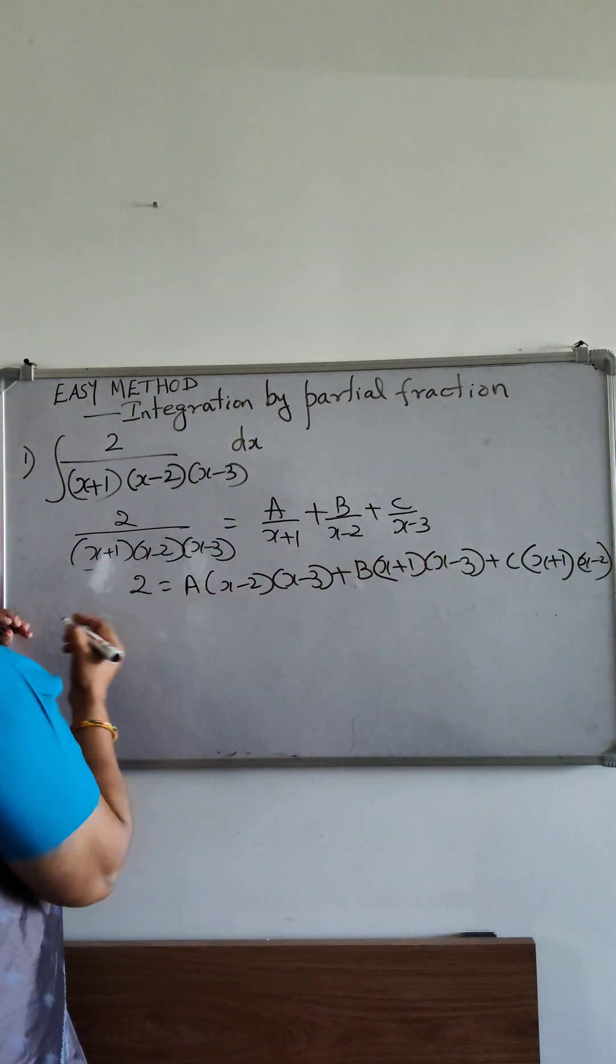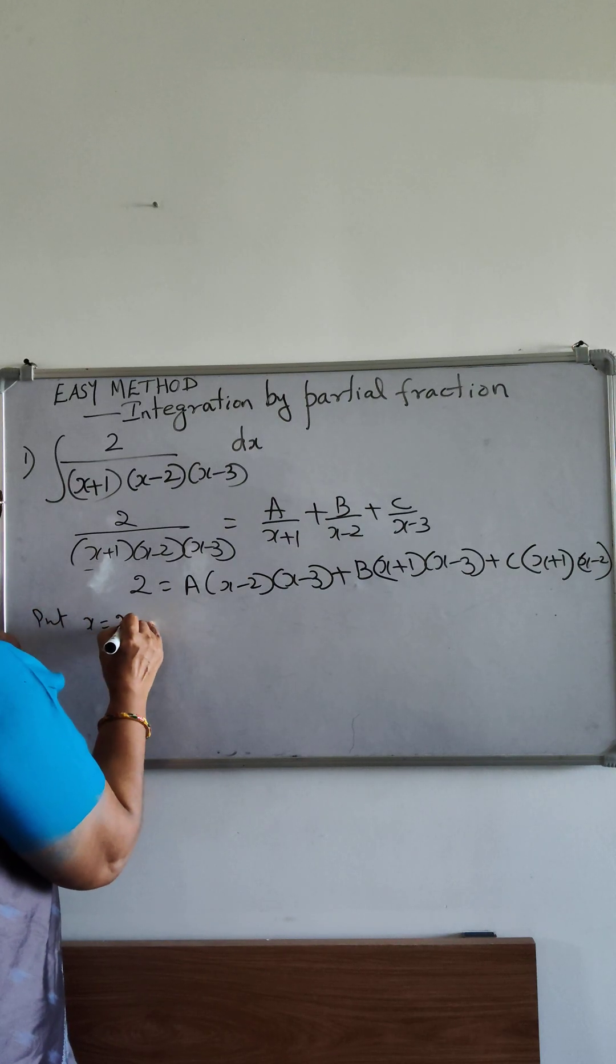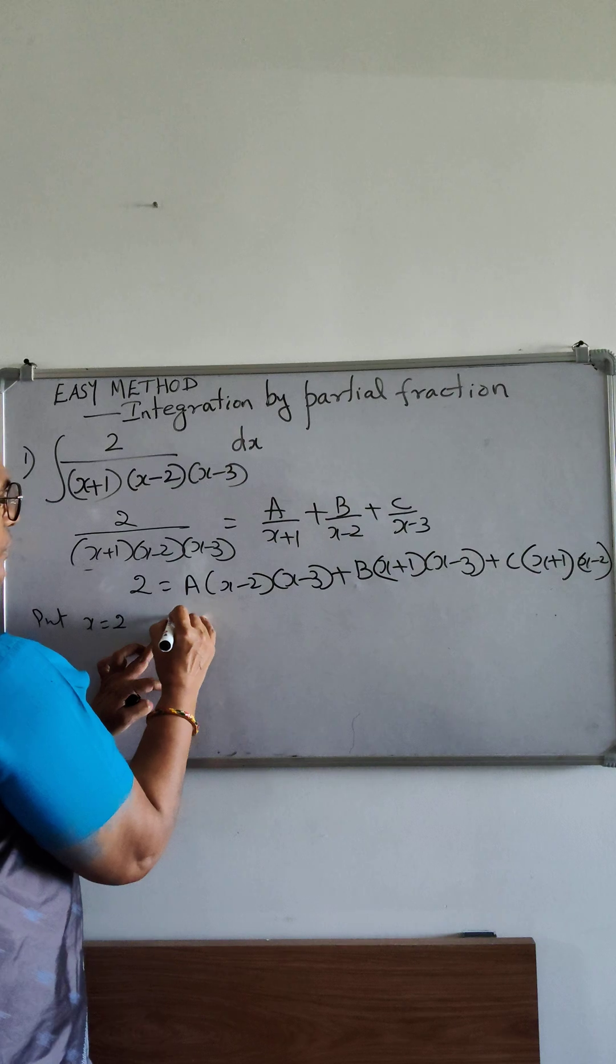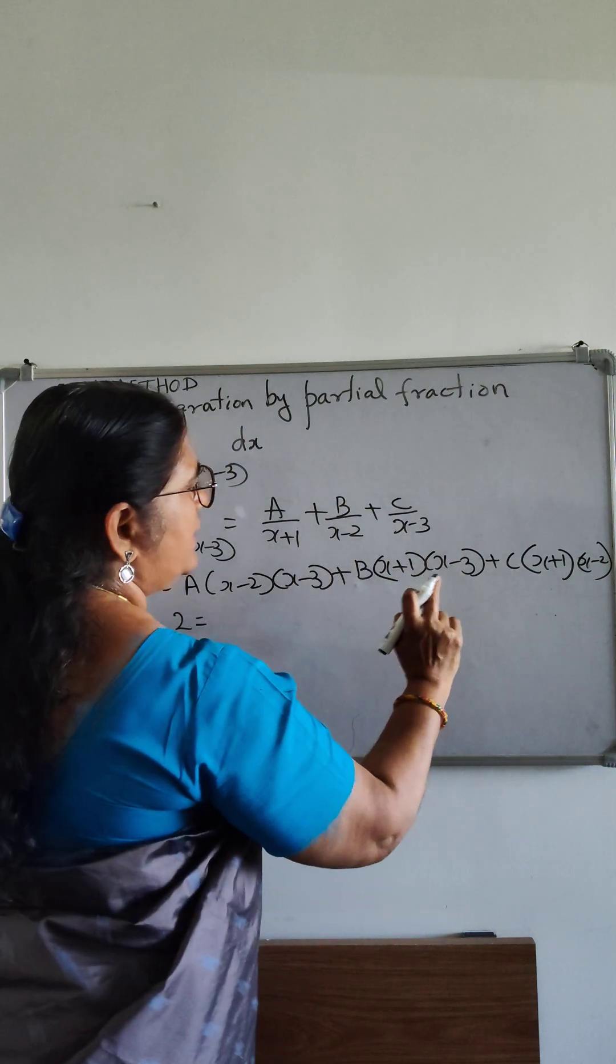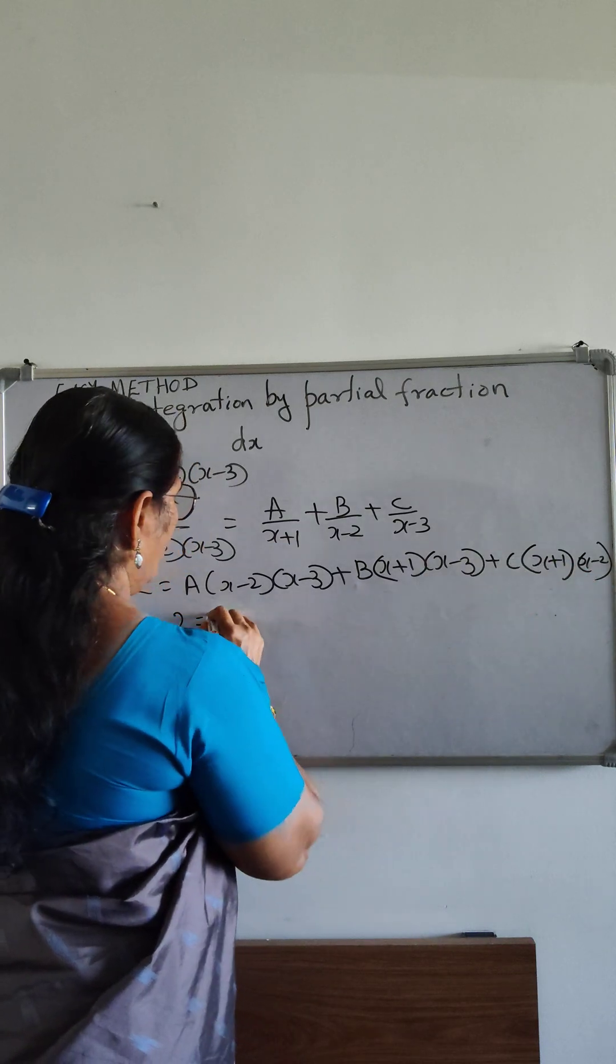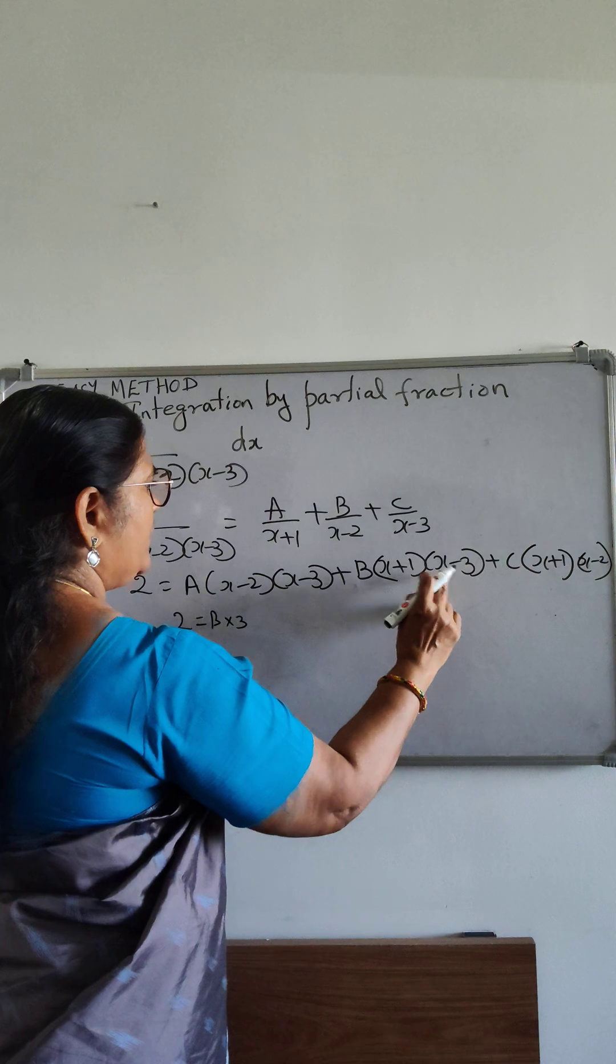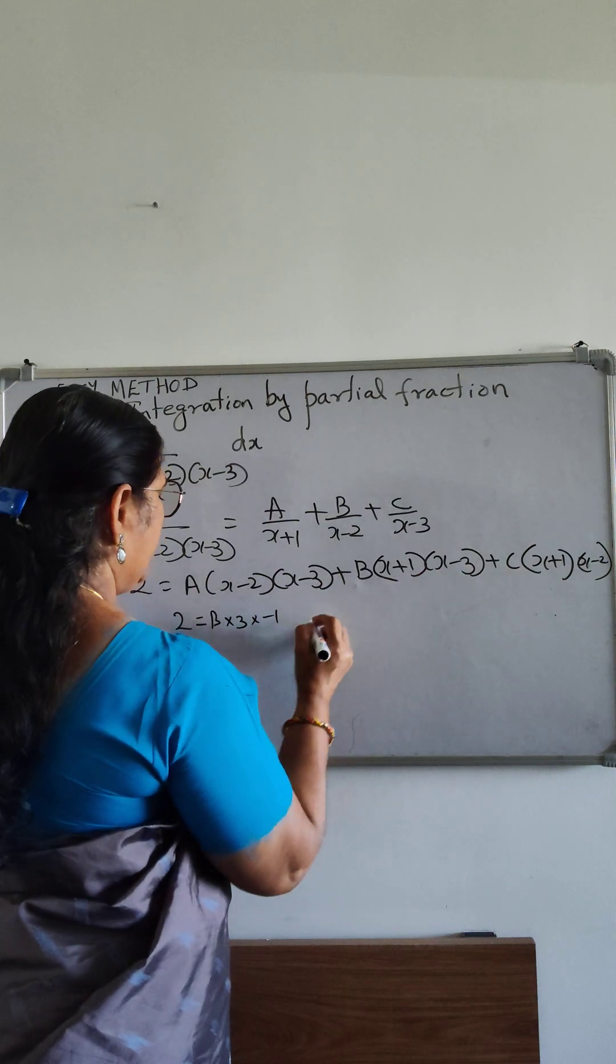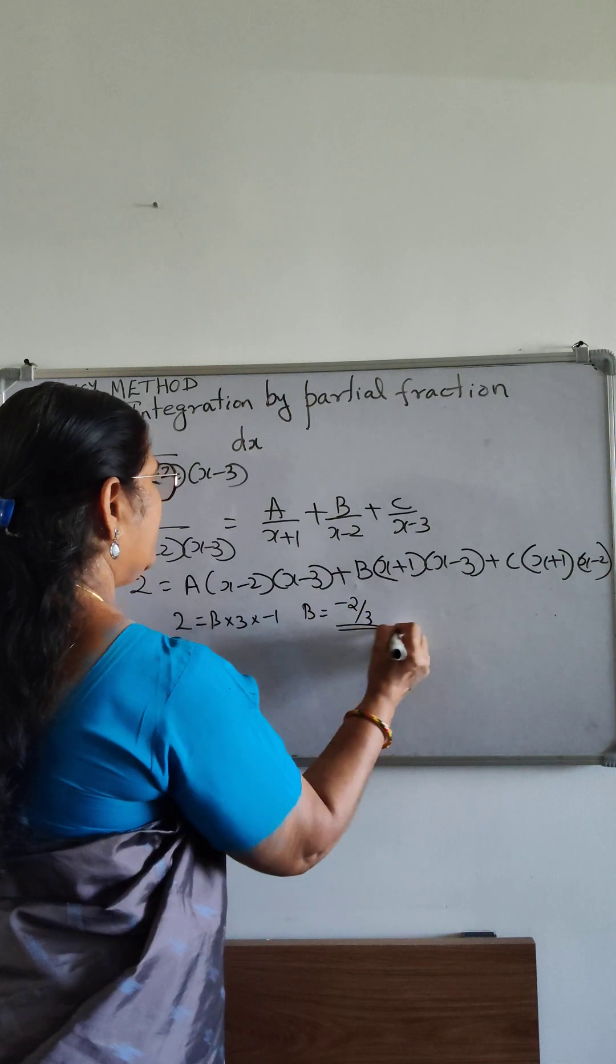To find a, b and c, put x equal to 2. So 2 equal to, this term cancels and this term also cancels. So b into 2 plus 1 is 3, 2 minus 3 is minus 1. So b equal to minus 2 by 3.